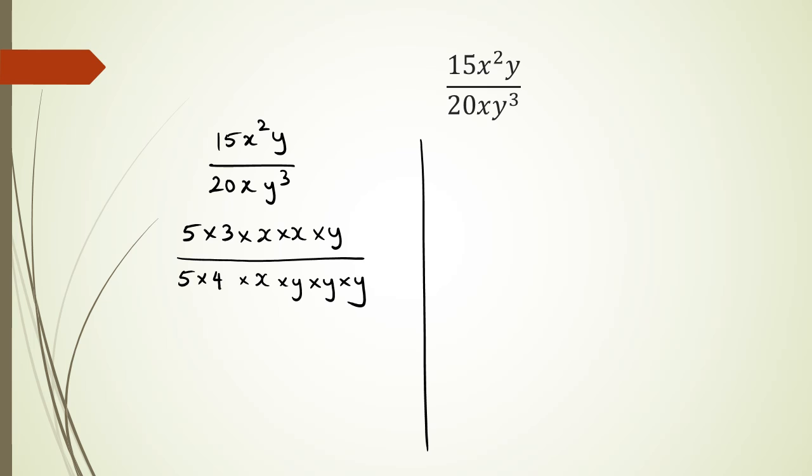So now time to start cancelling things out. My two fives cancel. I've got an x and x cancel. Y and a y cancel. So in my numerator, I have 3x. And in my denominator, I have 4y squared.